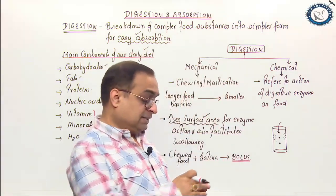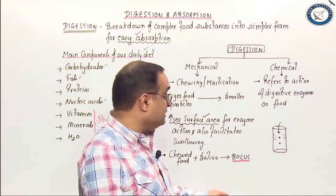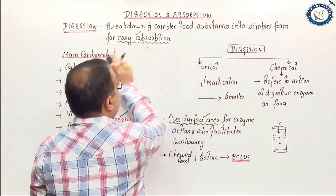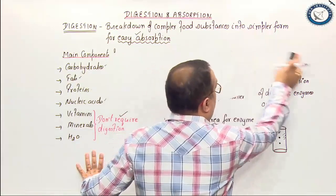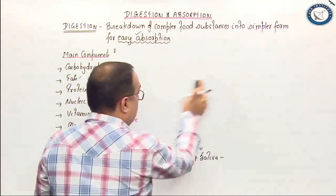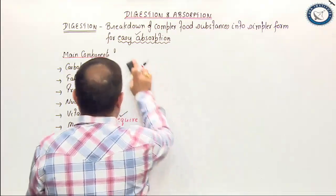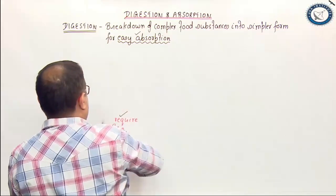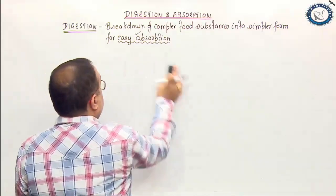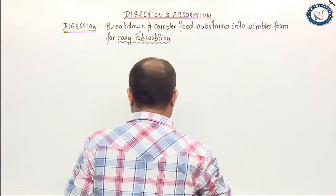Now we will see step by step how the different food components are digested — carbohydrates, proteins, and fats. Let us first start with the digestion of carbohydrates. The main carbs of our daily diet include starch, sucrose, and lactose.